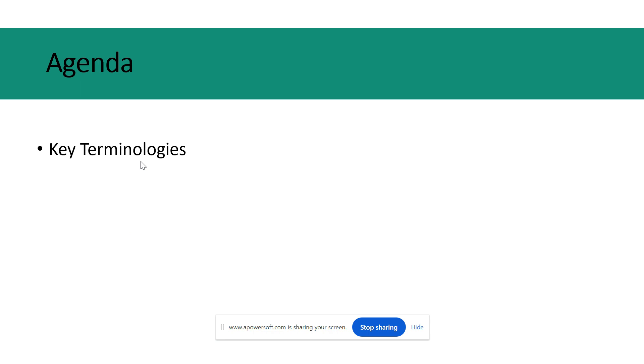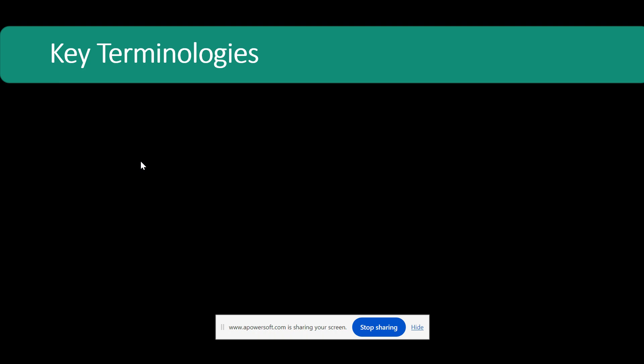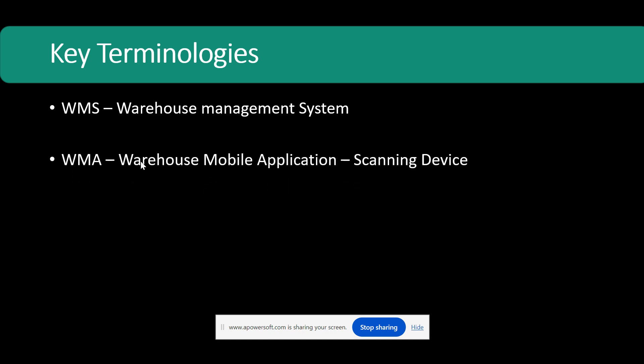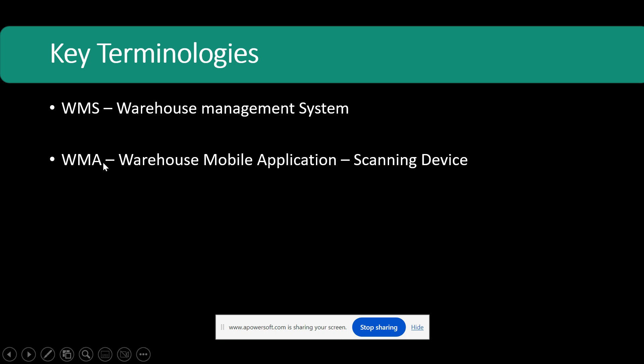First, throughout this entire series, whenever I refer to WMS it means Warehouse Management System. In D365, WMS refers to the advanced warehouse management processes followed across the system. WMA refers to the Warehouse Mobile Application, which is the key tool in warehouse management — it is a scanning device or mobile app using which you perform work inside your warehouse. There is an important difference between WMS and WMA.